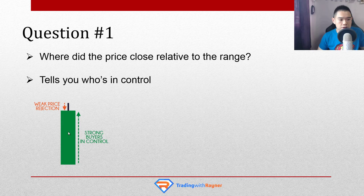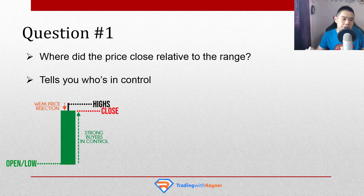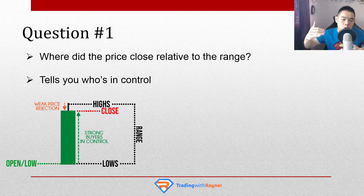Here's how it works. Look at this green candlestick pattern — it tells you that the price has closed higher for the time period. It opened here and it closed here. There is no lower wick, so the opening price is also the low of the day. There is an upper wick. The price closed near the highs of the range. The range is simply the distance between the highs and the lows. The price closed near the highs of the range, and this tells you that the buyers are in control — that's why they were able to close the price near the highs of the range.